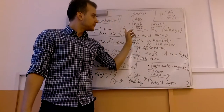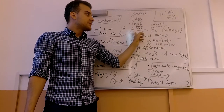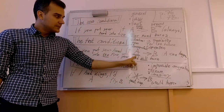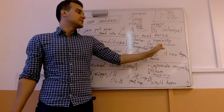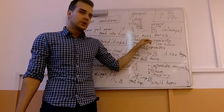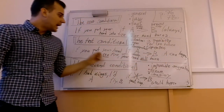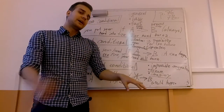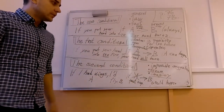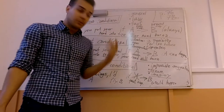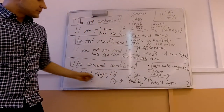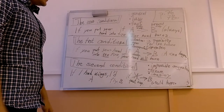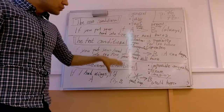Let's summarize. Zero conditional: if A happens, B always happens — it's about the general law. First conditional: if A happens, B will be the result — I'm talking about a situation right now, and A can happen, it is a possibility. For example, I can put my hand into the fire — I don't want to, but if I do, I will burn my hand. Second conditional: I'm talking about a dream or something impossible — if I had wings I would fly, if I was a woman I would bear children.